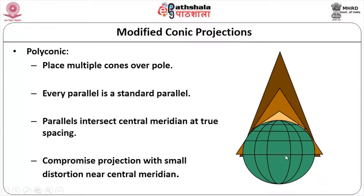Instead of using one cone and one single parallel, these parallels intersect the central meridian at true spacing — that is the best part. The main drawback is that we have to compromise with small distortion near the central meridian only. At the central meridian it will be affected, whereas in the surrounding area there will not be any error.